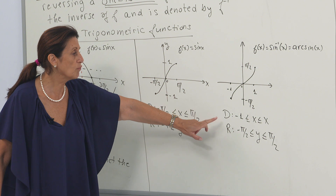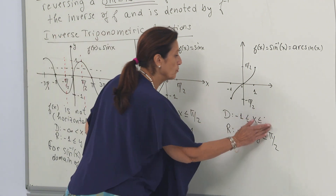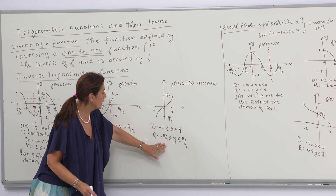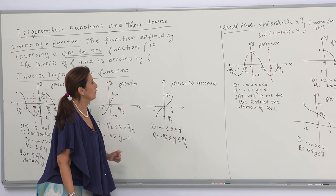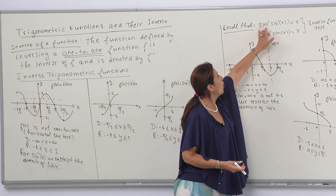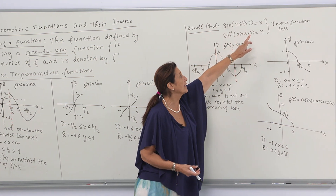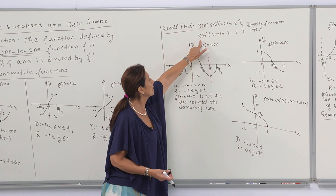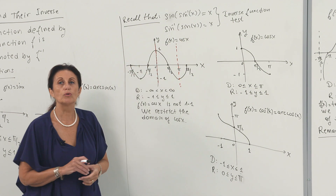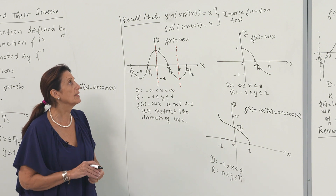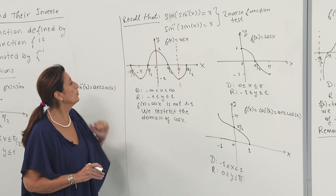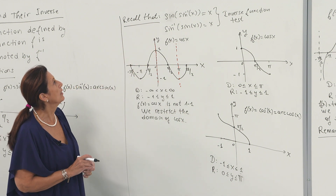The domain of the arcsine is from minus 1 to 1, and the range is between minus π/2 and π/2. Recall that sine composed with inverse sine is equal to the identity function, and inverse sine composed with sine is also equal to the identity function. This is the inverse function test, and we will use this identity later on.